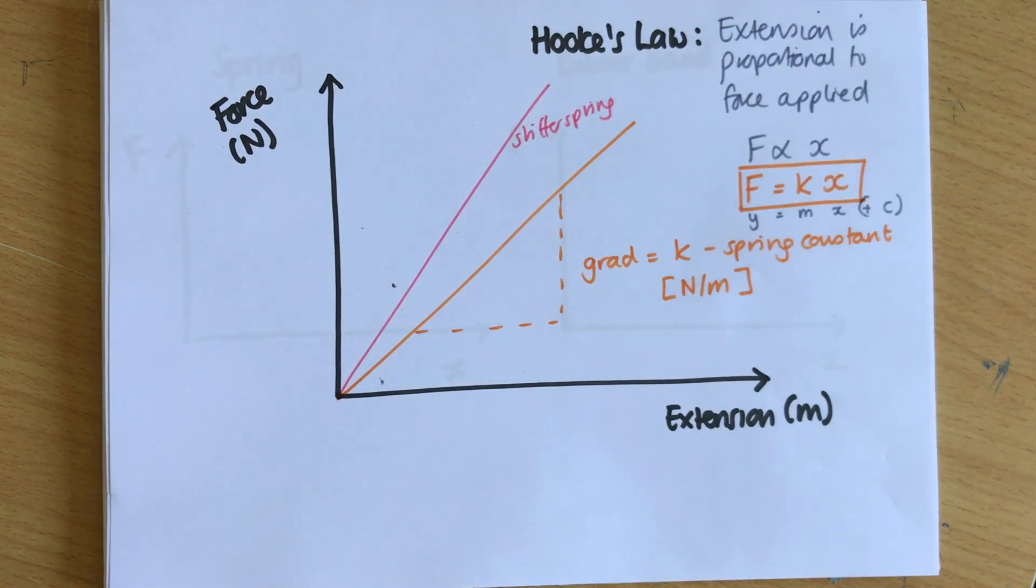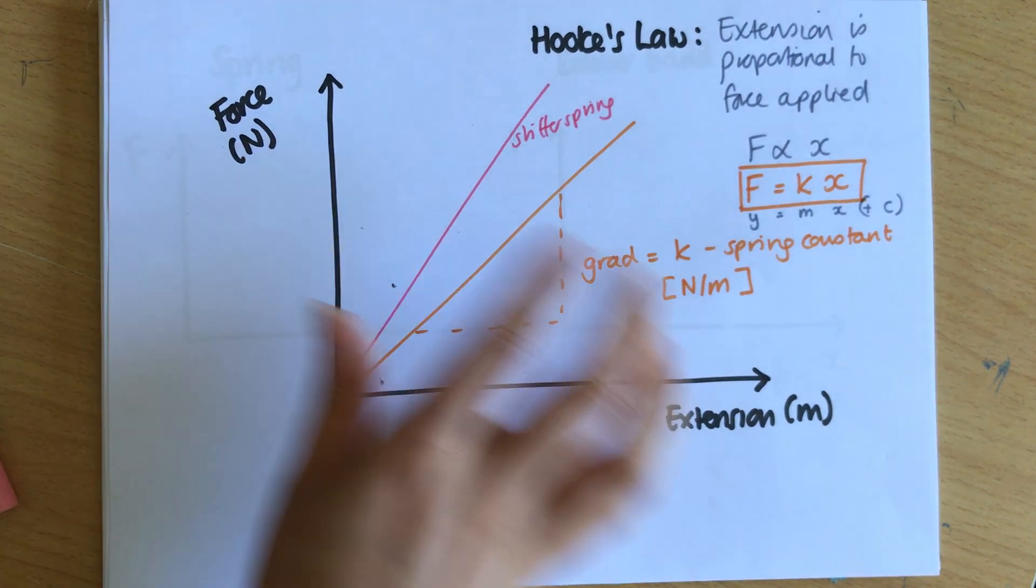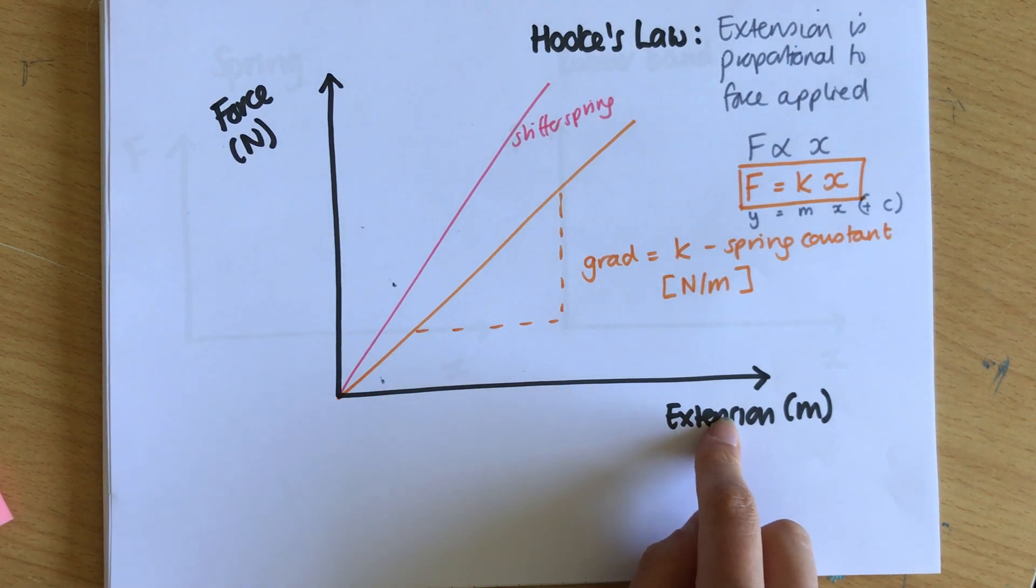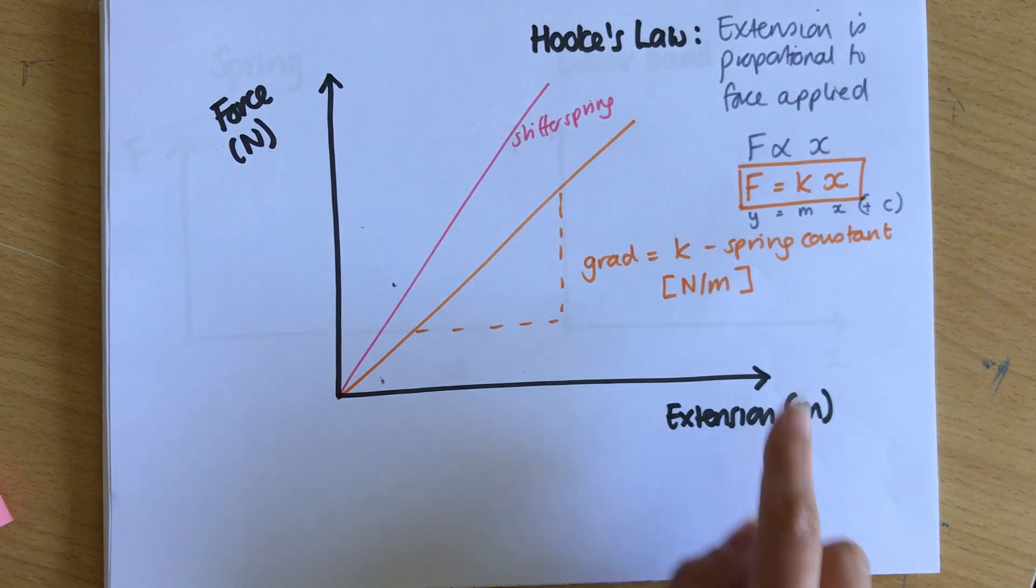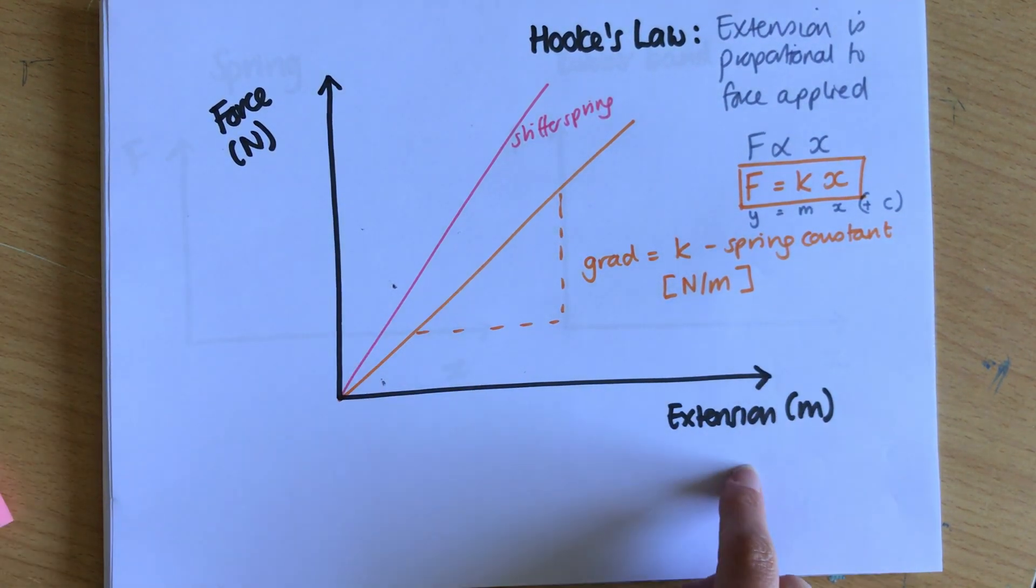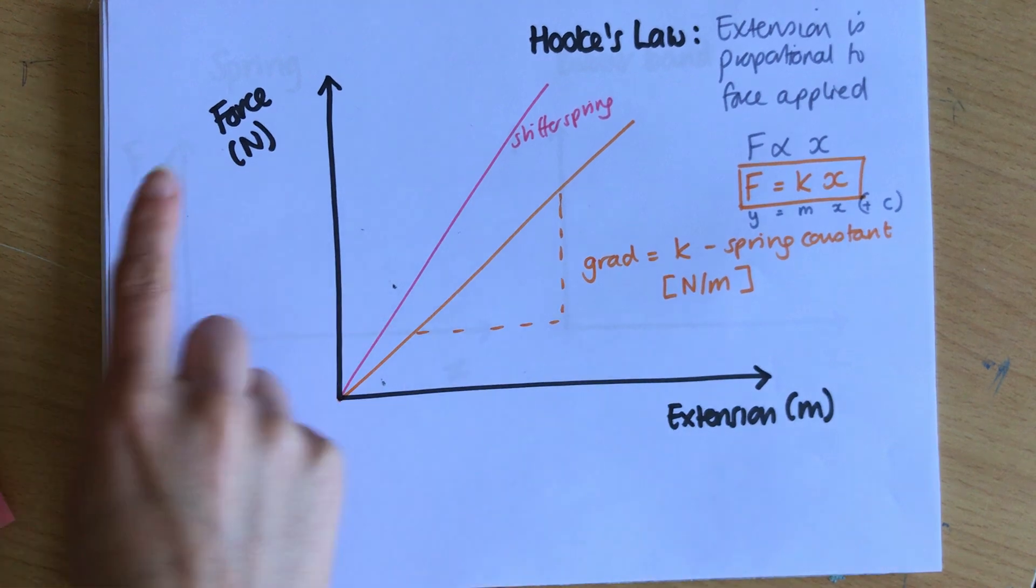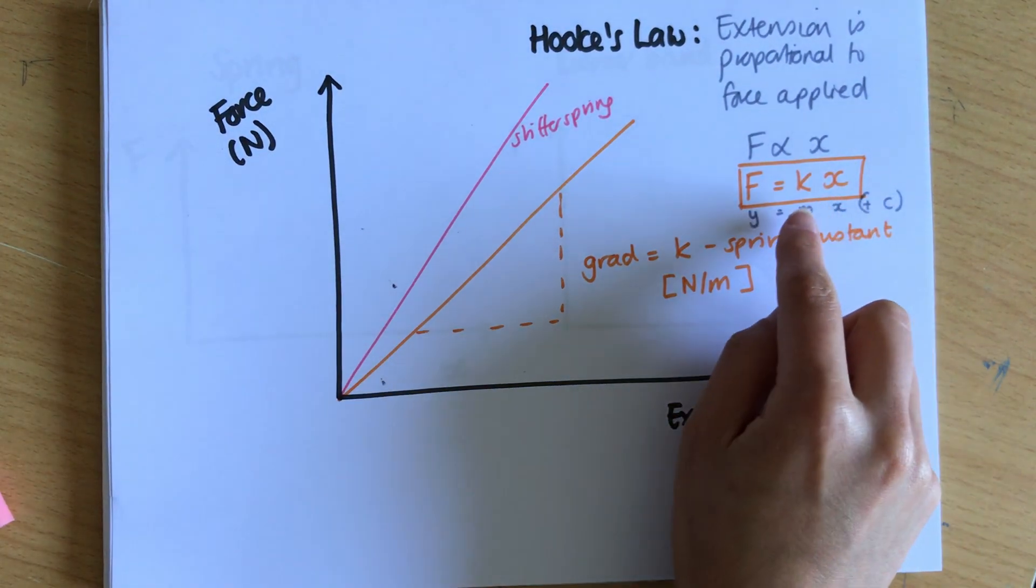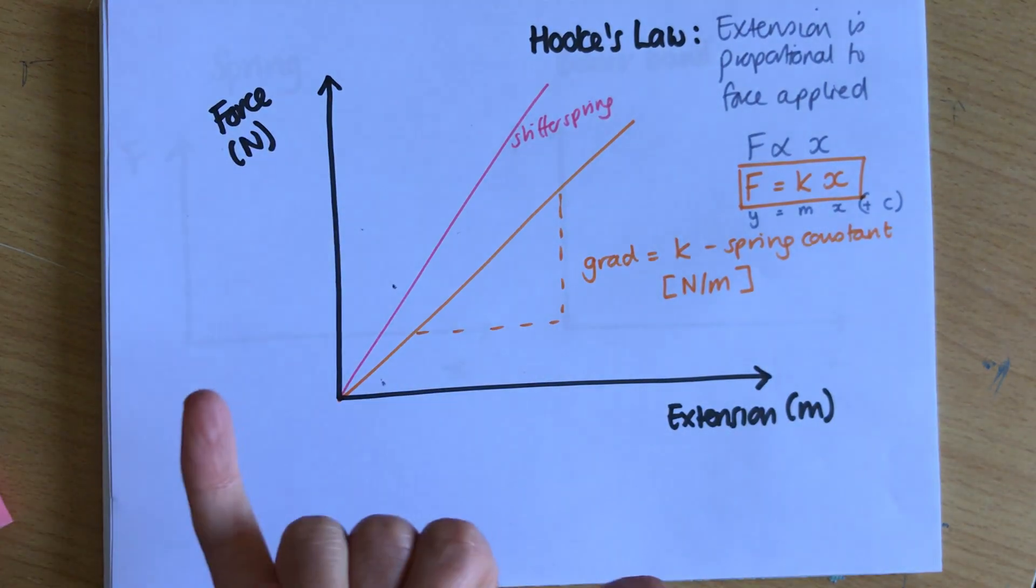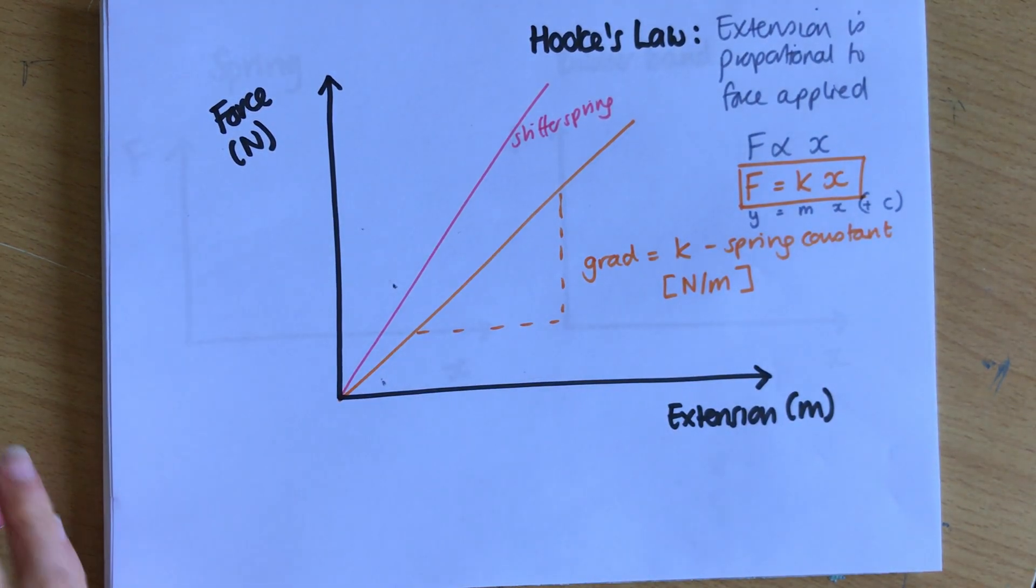It's harder to extend it so I need a higher force to extend it slightly less. And you might be thinking these variables are on the wrong side because normally we would put the independent variable—the thing that we change—on the x-axis and the dependent variable on the y-axis. The thing that we change is the force and then that changes the extension, but they put it this way around so we have this nice easy equation of F equals kX where k is the gradient. If we had it flipped we'd have to say that k was the inverse of the gradient.